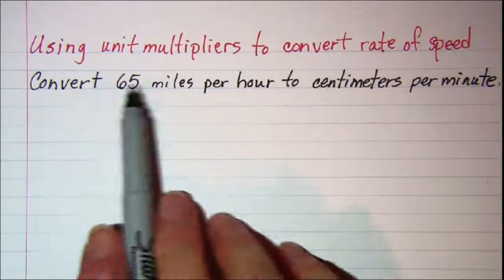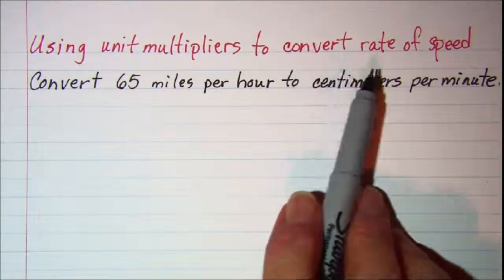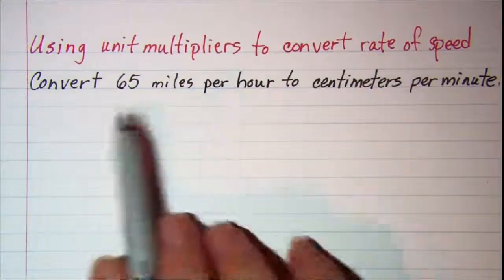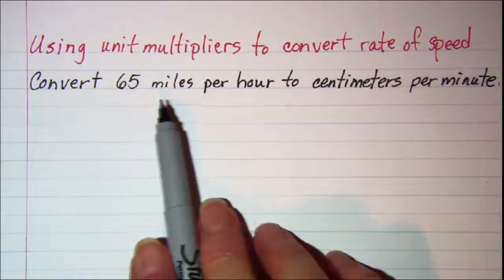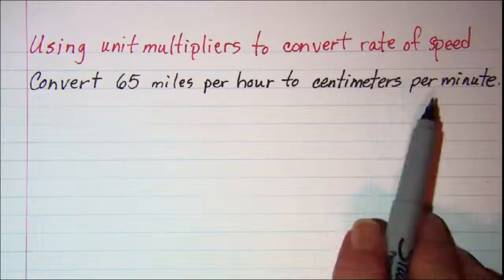In this video we will be using unit multipliers to convert rate of speed. Our first problem is to convert 65 miles per hour to centimeters per minute.